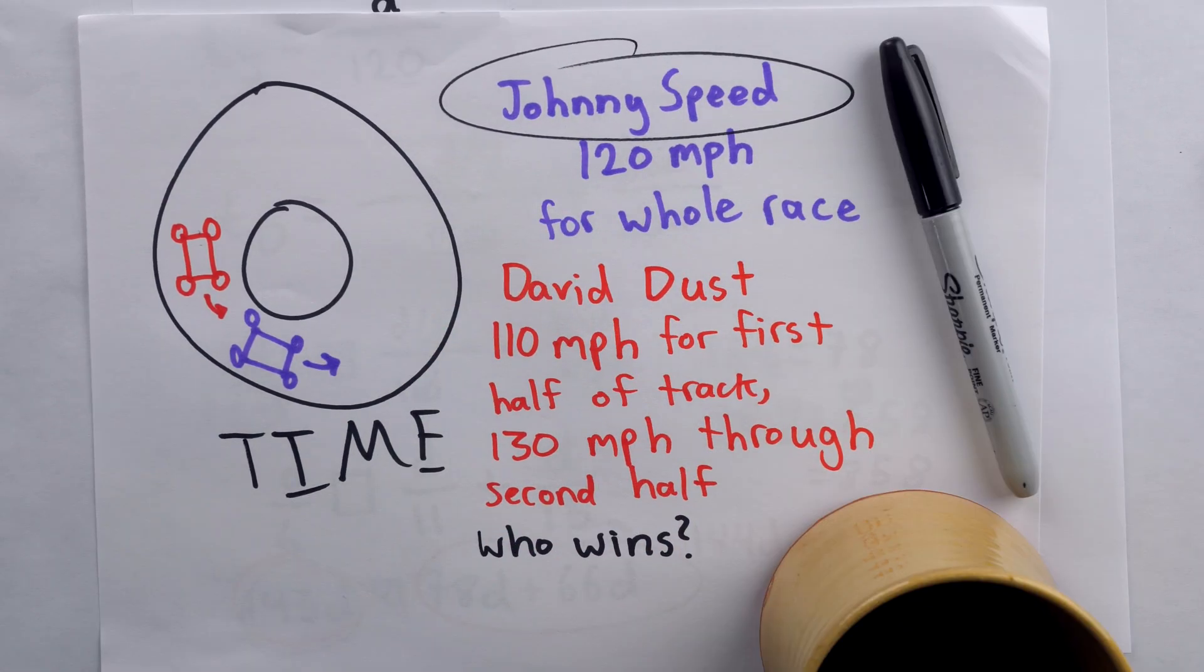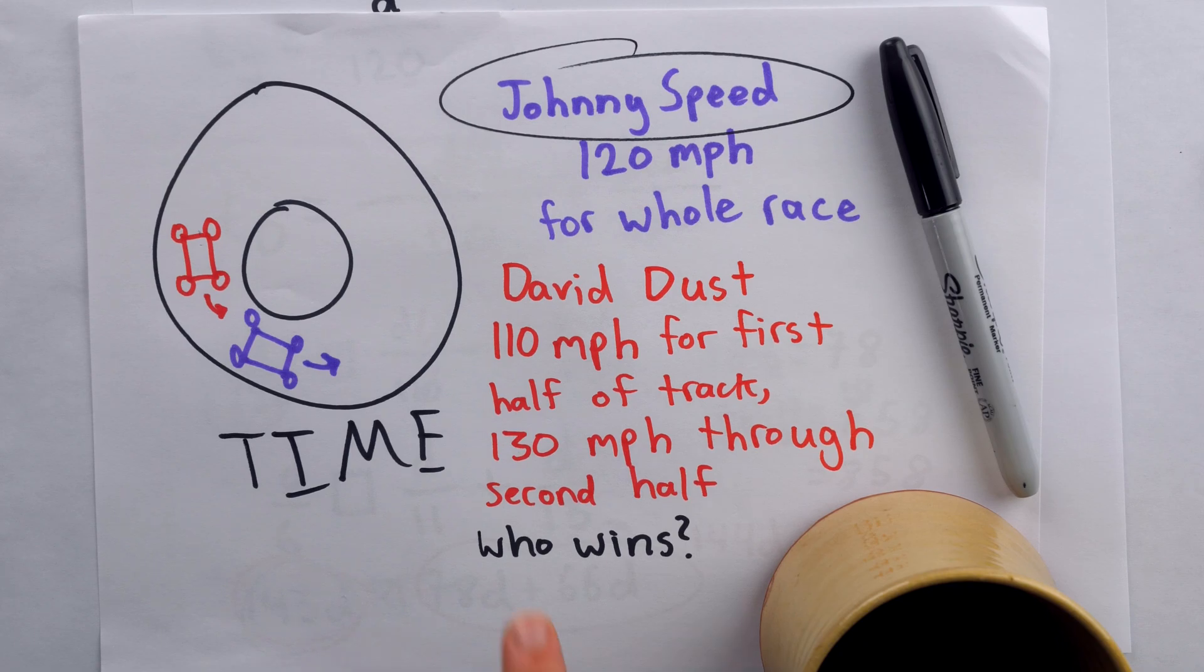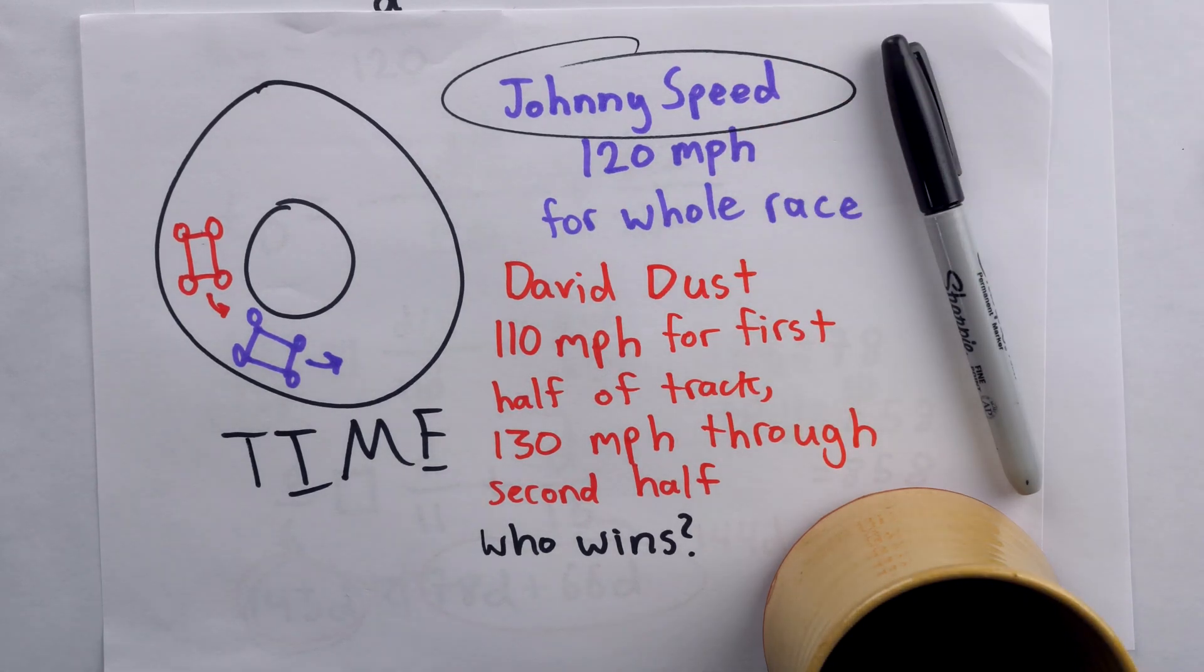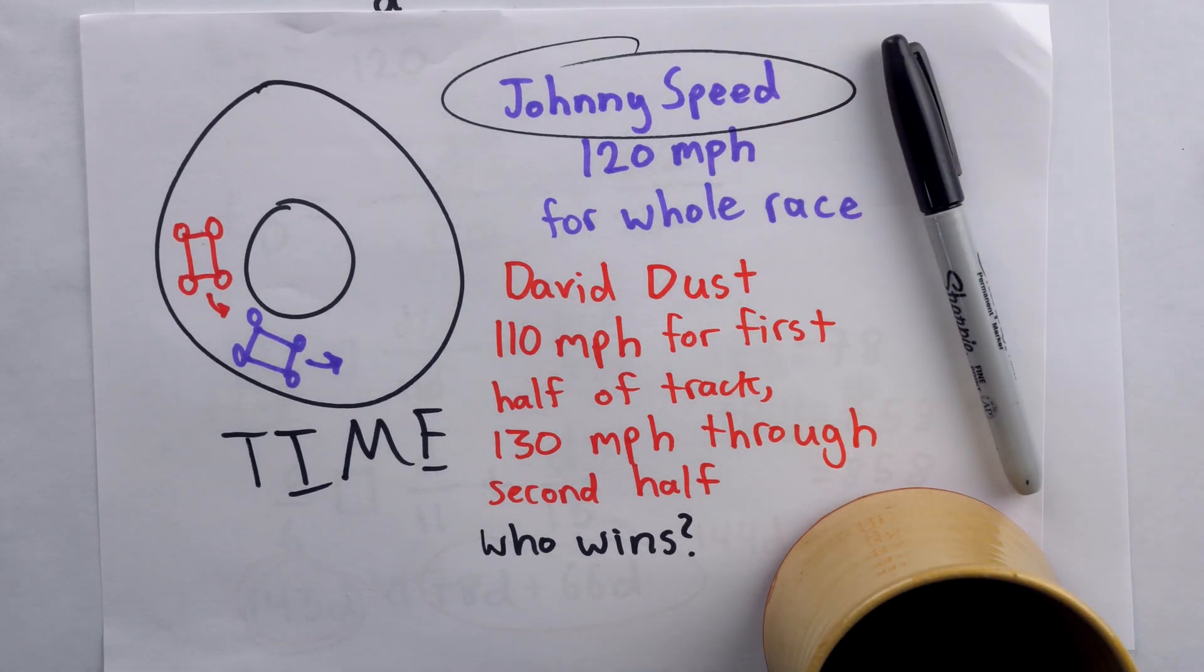So tell me what you thought. Did you think it was going to be a tie or did you think that 130 miles per hour of David Dust was actually going to pull him ahead in the second half? Or maybe all along you thought Johnny Speed was going to be the guy. I would have guessed David Dust, that 130 miles per hour for the second half of the course. I thought that was going to do it. But once you run the numbers, Johnny Speed's our guy. That's the champion. Be sure to subscribe for more of the swankiest math videos on the internet.